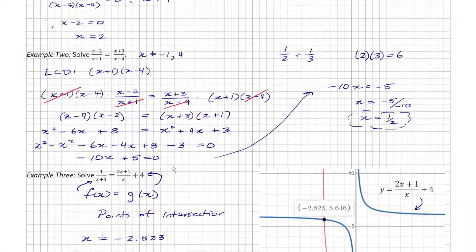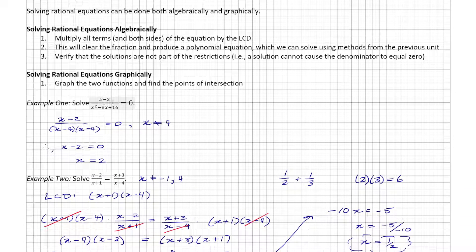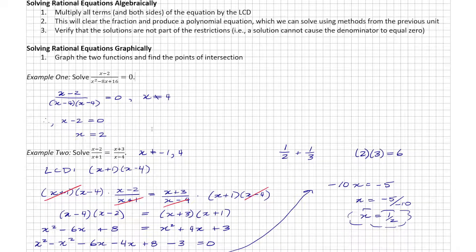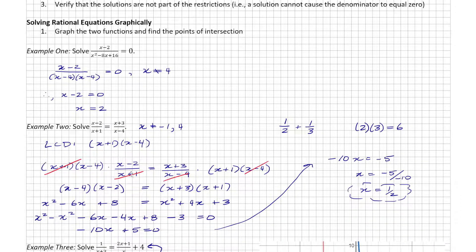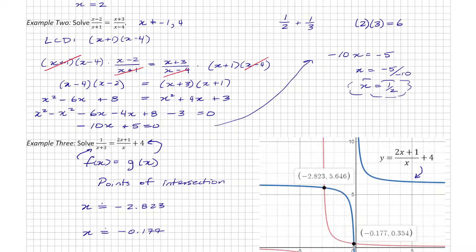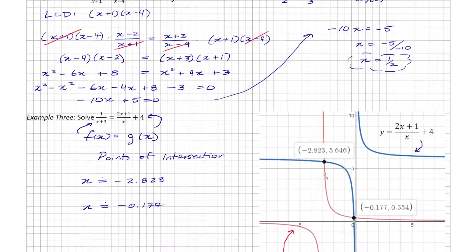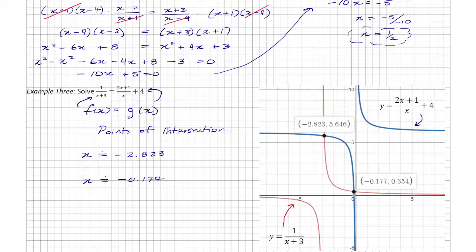To recap: factor the denominator first so you can state all possible restrictions, then clear the fraction by multiplying by the LCD, move everything to one side, and solve the polynomial equation to find values of x. This is the algebraic method. You can also solve graphically by graphing the left-side function and the right-side function and finding where they intersect.